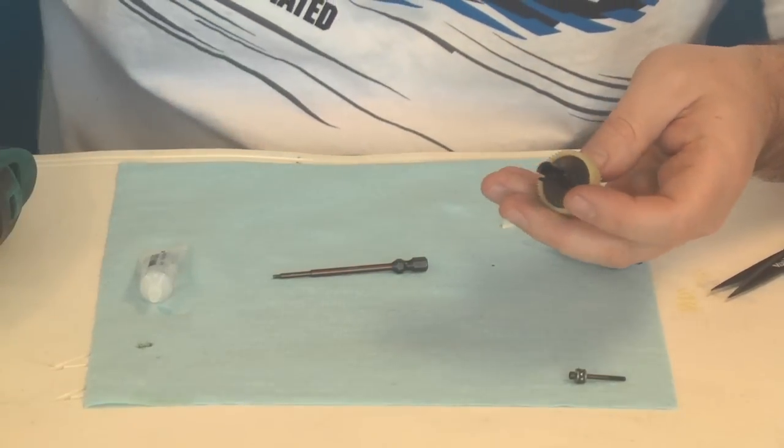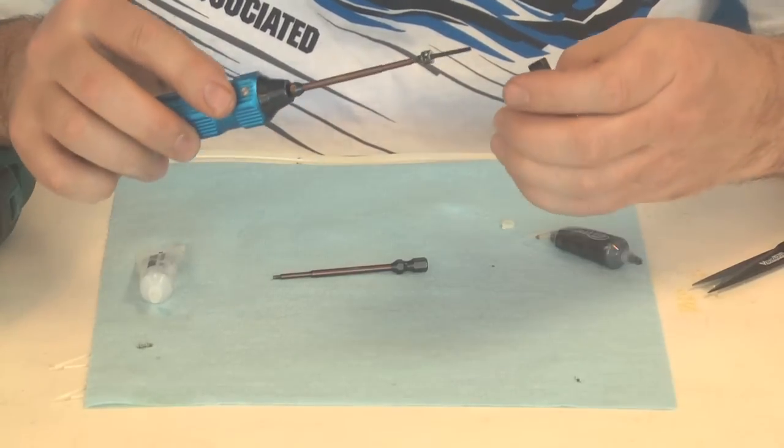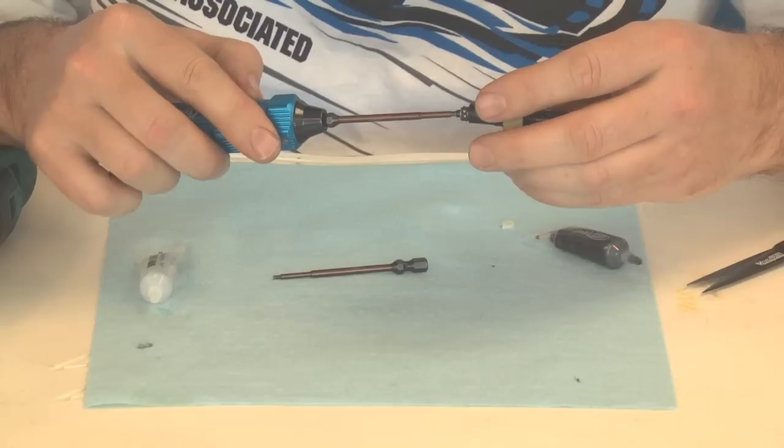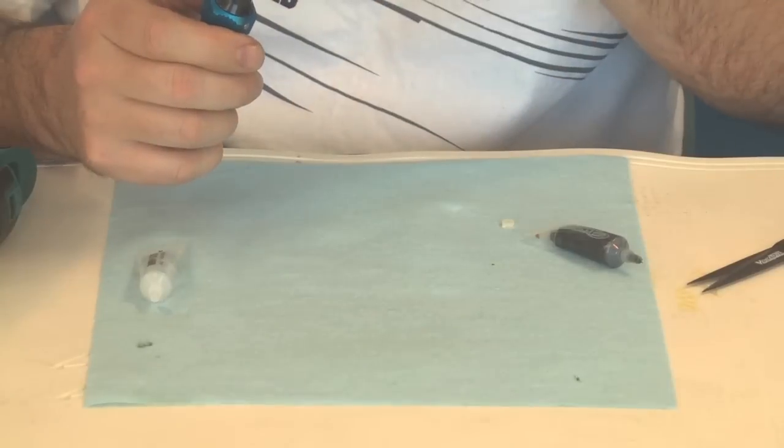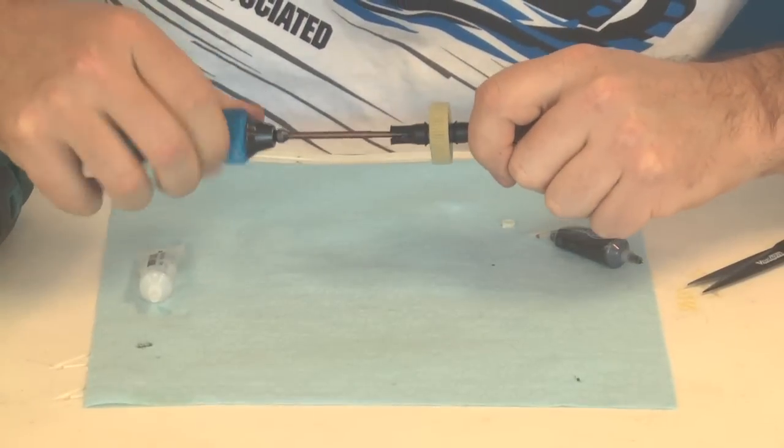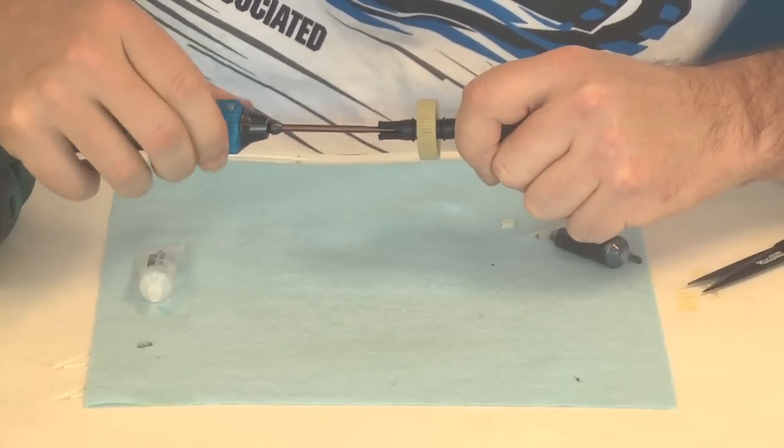And we're going to take our two millimeter wrench, 5/64th, close enough. Try and find the hole, there we go. Take another wrench, press it down in there like that, put a little bit of tension on it.